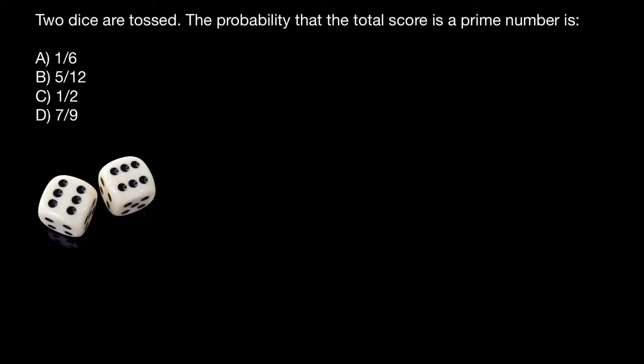Two dice are tossed. The probability that the total score is a prime number is, and you have to choose one of these answers. Before I show you how to solve this problem, I want to show you the trap that probably most of you would fall into, and I also fall into this trap, and it would be good for your better understanding of many types of probability problems.